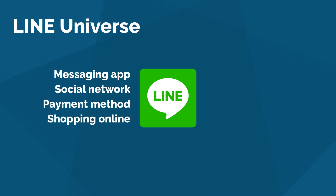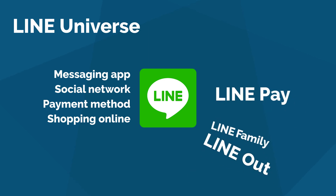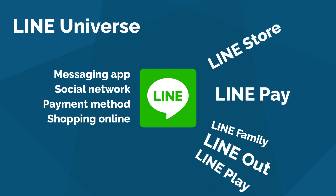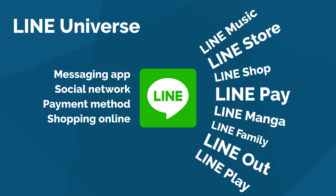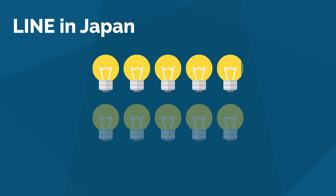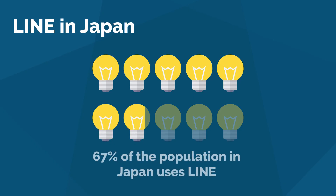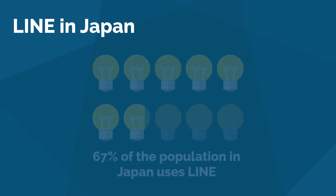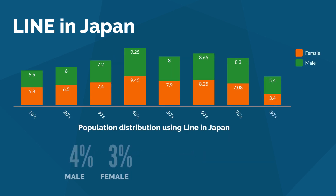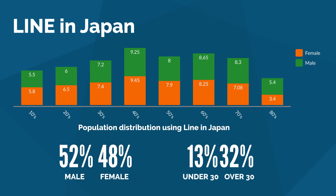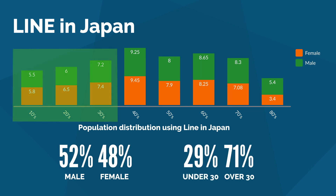LINE comes with a constellation of applications able to handle payment, online stores, phone calls, games, music, and entertainment. To give you an idea of how common LINE is in Japan, it's enough to look at the percentage of population using the app, with an interesting distribution by age — especially for under 30 and over 60.